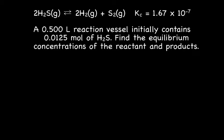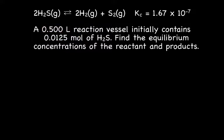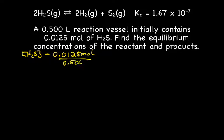We have another problem to work on — it's a tricky one and we're going to learn something different. First thing different: we're not actually given an initial concentration; we're given volume and moles instead. However, our concentration is in molarity, and molarity equals moles over liters. So to figure out the concentration of H2S, we take the moles of H2S, which is 0.0125, divided by the volume, giving us a molarity of 0.0250 M.